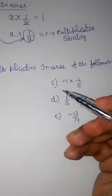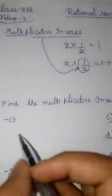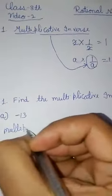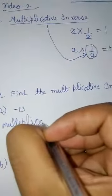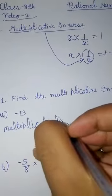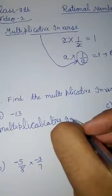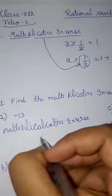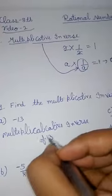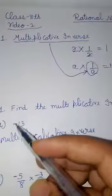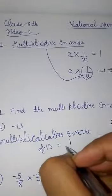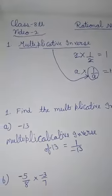Now, multiplicative inverse of following. Now, minus 13. We multiply it with minus 13. Minus is the meaning of minus. We multiply it with additive inverse. What do we do? Reciprocal. We multiply it with reciprocal.